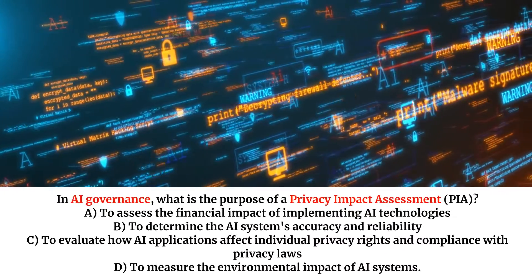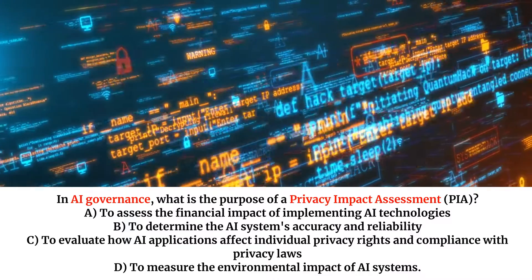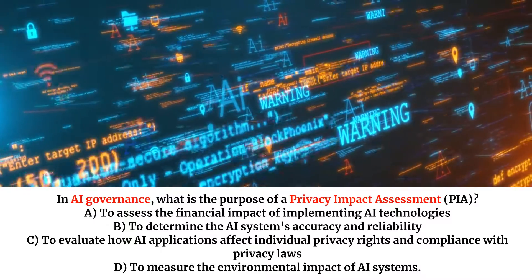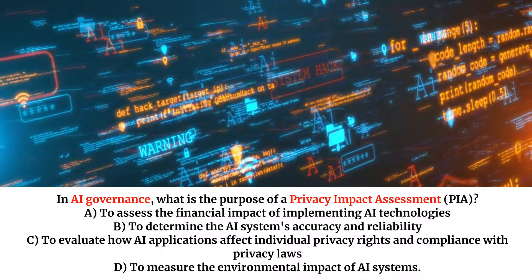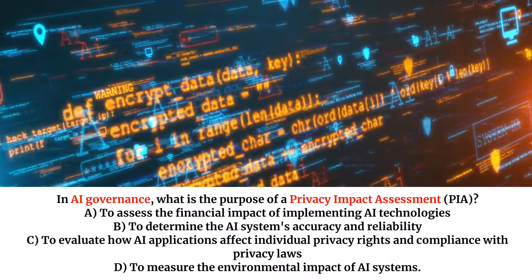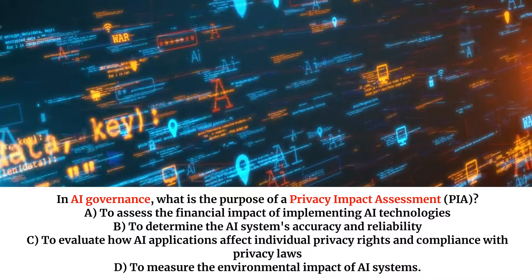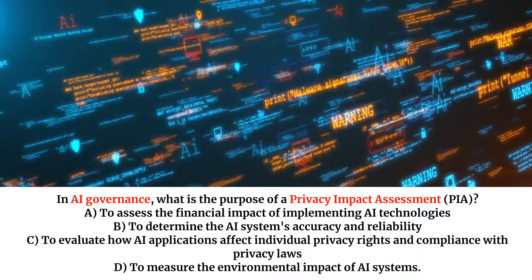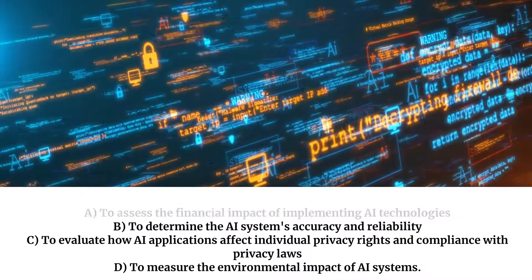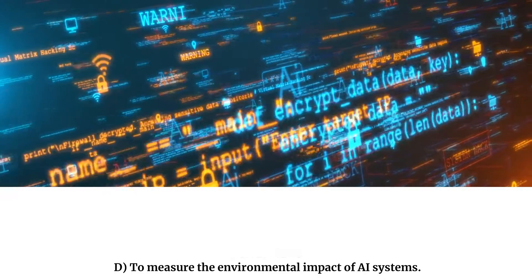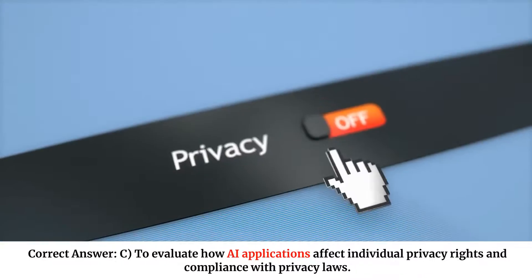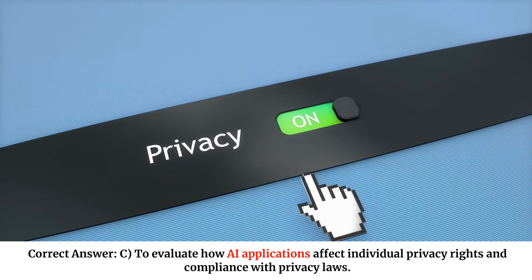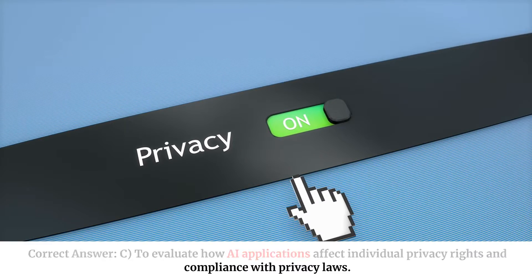In AI governance, what is the purpose of a privacy impact assessment? A. To assess the financial impact of implementing AI technologies. B. To determine the AI system's accuracy and reliability. C. To evaluate how AI applications affect individual privacy rights and compliance with privacy laws. D. To measure the environmental impact of AI systems. Correct answer: C. To evaluate how AI applications affect individual privacy rights and compliance with privacy laws.